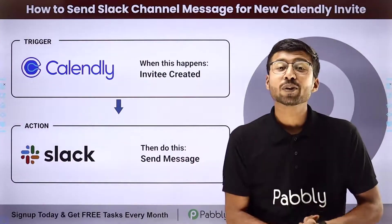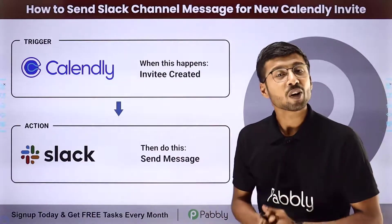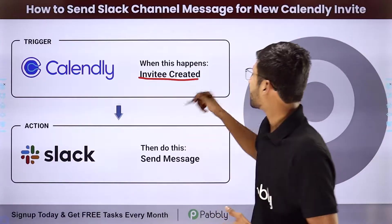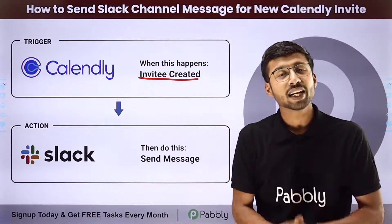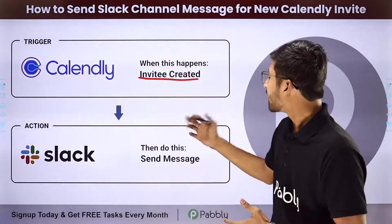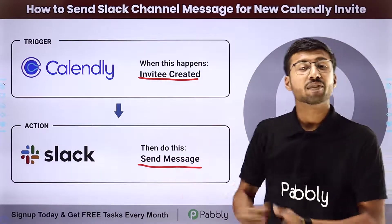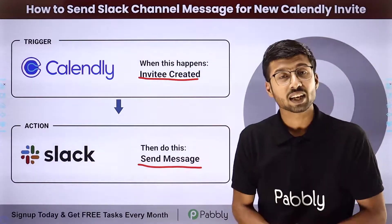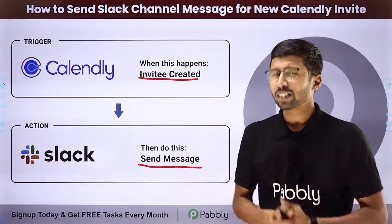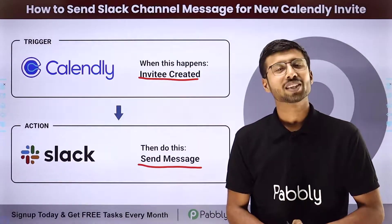You can completely automate this process. The trigger of this automation will be getting a new invitee created — a new appointment on Calendly from your customers. The action will be sending a channel message with the appointment details on Slack to update your team members. To set up this automation, come with me to my screen.